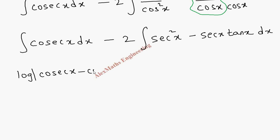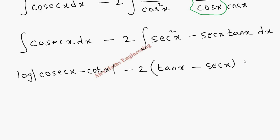Rewriting everything: the first term is cos x. Then minus 2 times the bracket — integration of sec squared x is tan x, and integration of sec x tan x is sec x, plus C. The log cos x minus cot x term can be further simplified as log of tan(x/2) if desired, otherwise the result is fine as is.